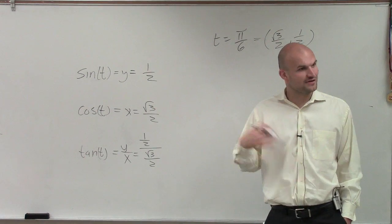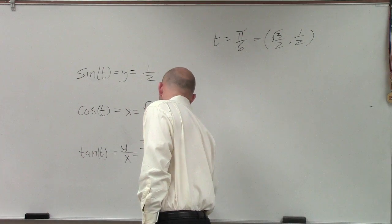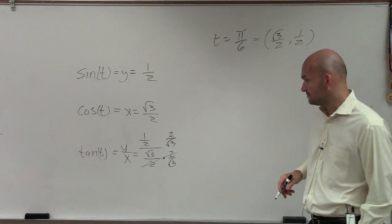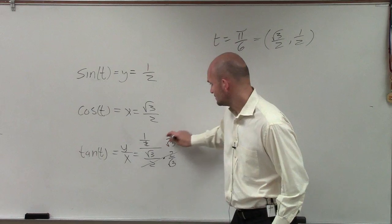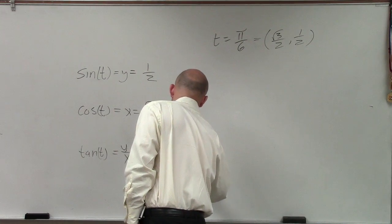So first thing we do, fraction divided by fraction, multiply by the reciprocal. That multiplies to 1. These divide to 1. So we're just left with 1 over the square root of 3.